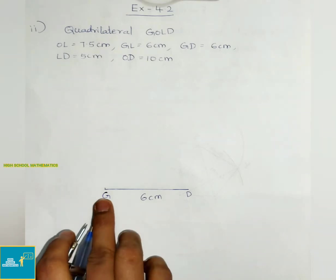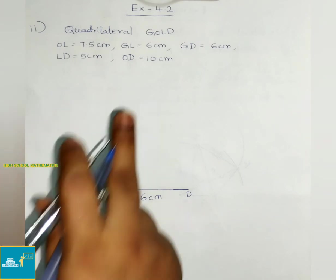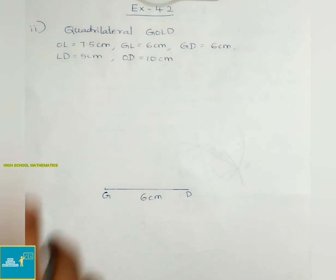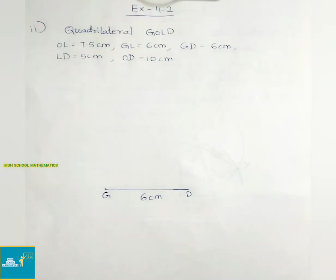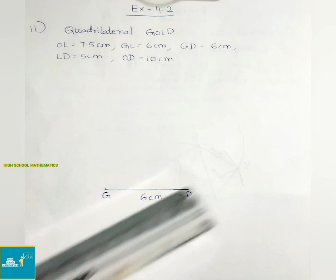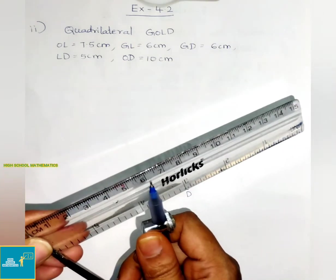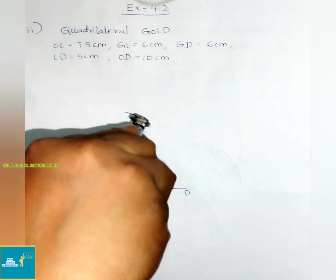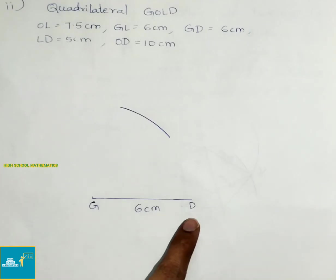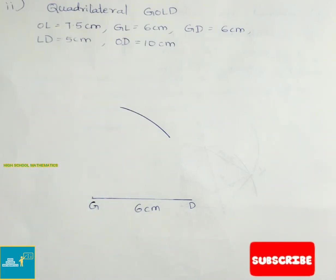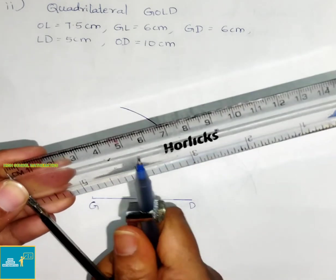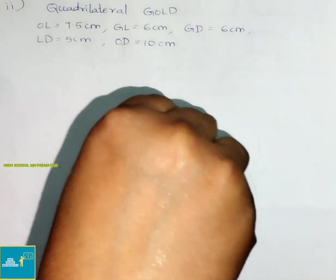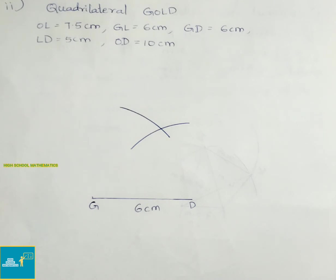With G as center, draw an arc of 6 cm. With D as center, draw a 5 cm arc. Take 6 cm and draw the arc from G, then take 5 cm and draw the arc from D. Both arcs meet at point L.